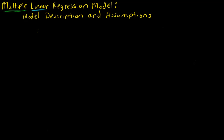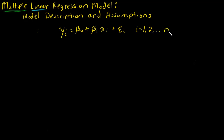In this video I'm going to introduce the multiple linear regression model. Recall the simple linear regression model: y_i equals beta naught plus beta_1 x_i plus epsilon_i for i equals 1 to n, where y was our response variable and x was our predictor variable. We had beta naught and beta_1 as our parameters — so we had two parameters.